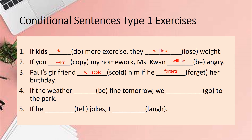Question four: If the weather is fine tomorrow, we will go to the park. This is a very likely result of the weather being fine tomorrow, so we use type 1 conditional sentence. Number five: If he tells jokes, I will laugh. 'I will laugh' is the result of the boy telling a joke, so we use type 1 conditional sentence.